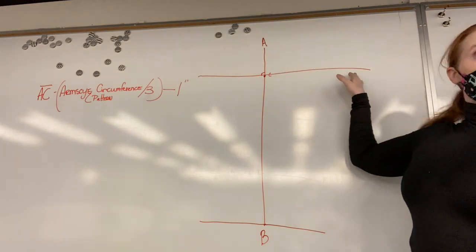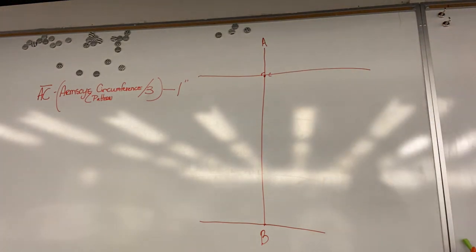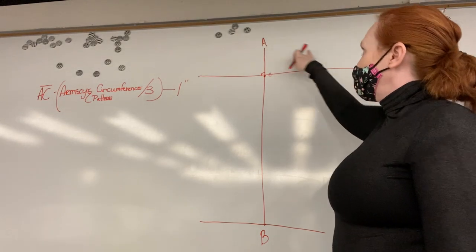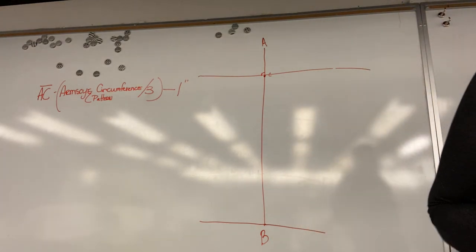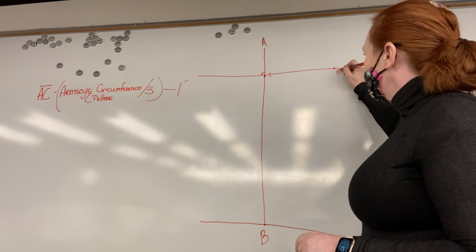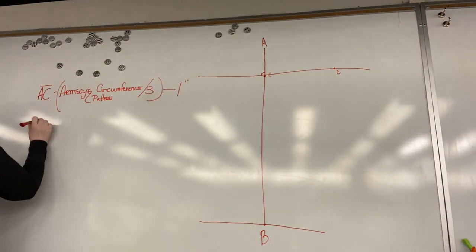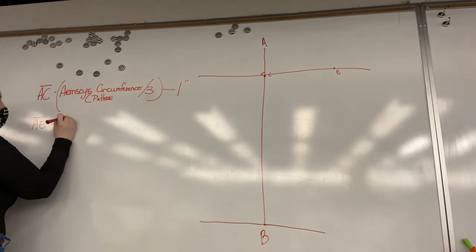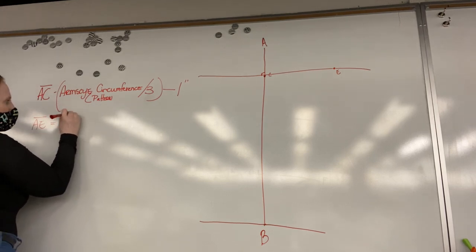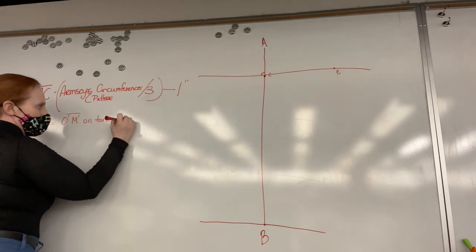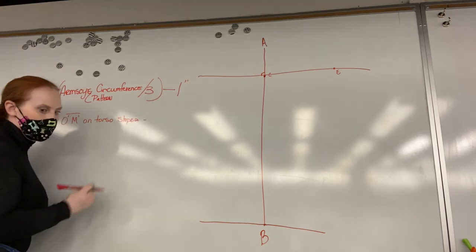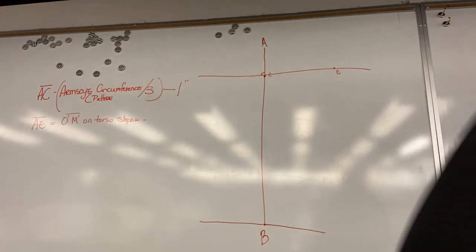So down here from A to intersect this line, we are going to take the front arm's eye measurement. So that was O junior to M junior. That measurement needs to come down from A and intersect this line. And it becomes E. So A to E equals O junior to M junior on torso sloper minus a quarter of an inch.